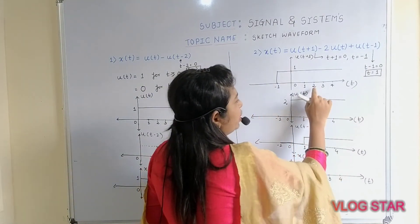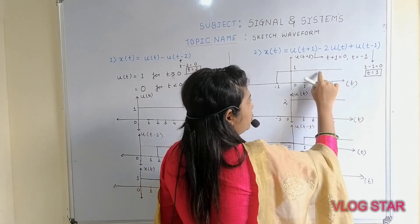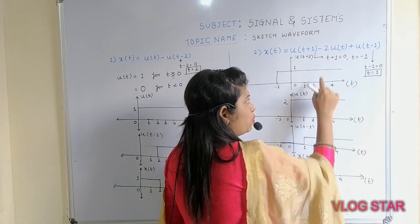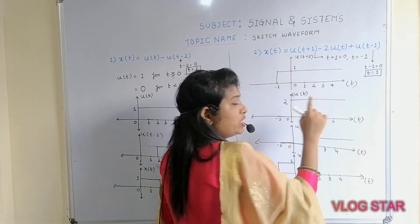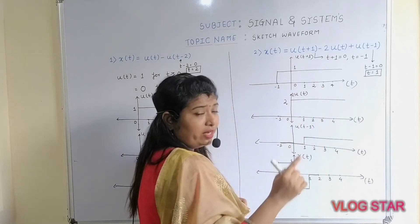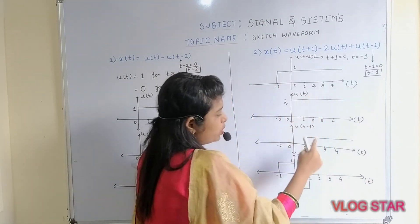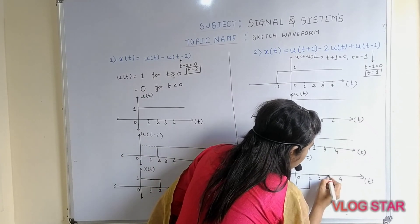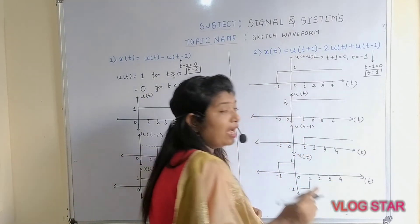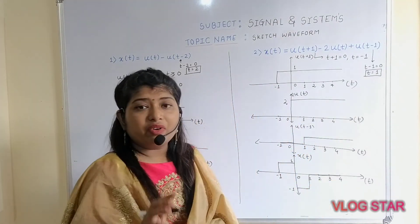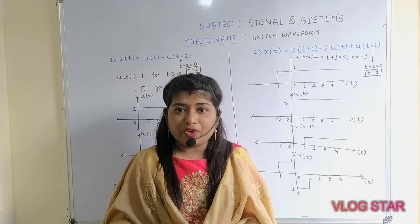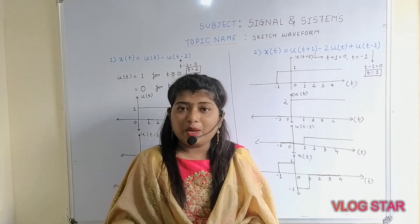For range 2 to 3: u(t + 1) amplitude is 1, 2·u(t) amplitude is 2, so 1 − 2 = −1; plus u(t − 1) amplitude 1 gives −1 + 1 = 0. Again the result is 0. This concludes how to sketch the waveform using the given equations.